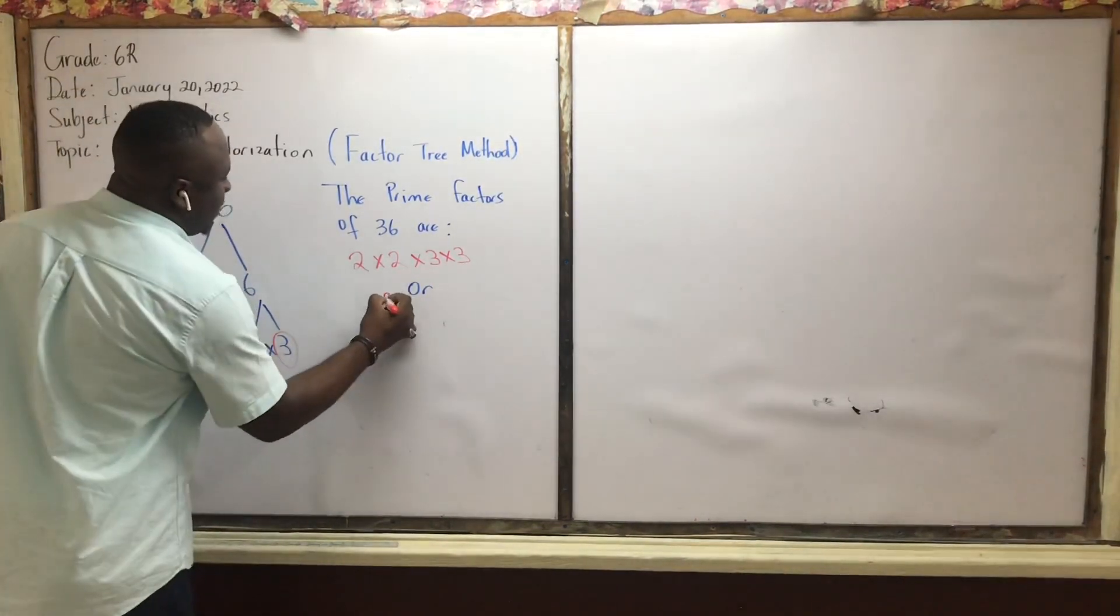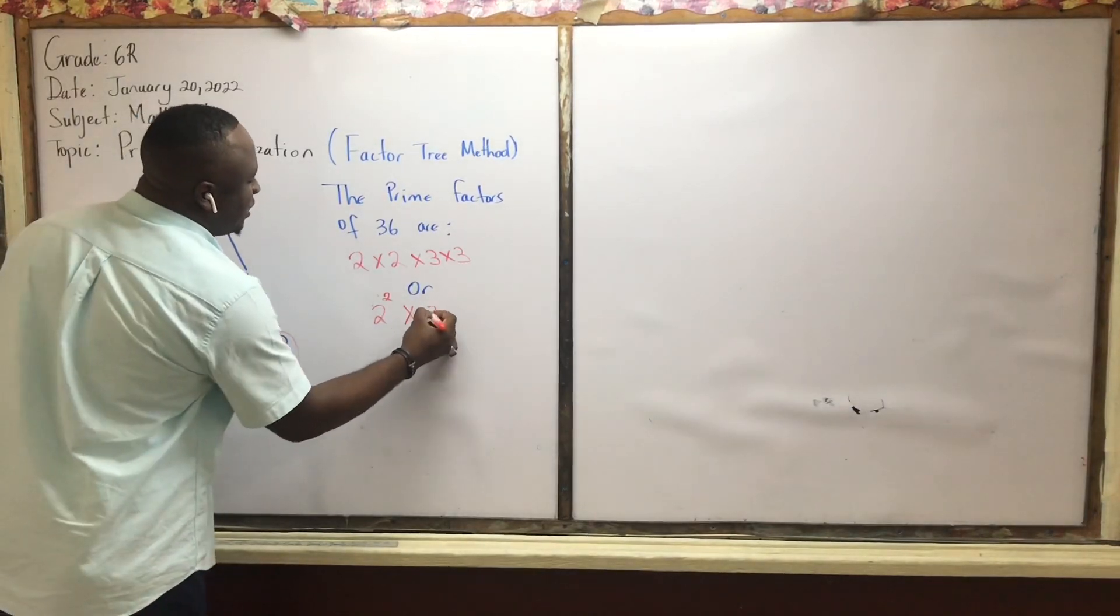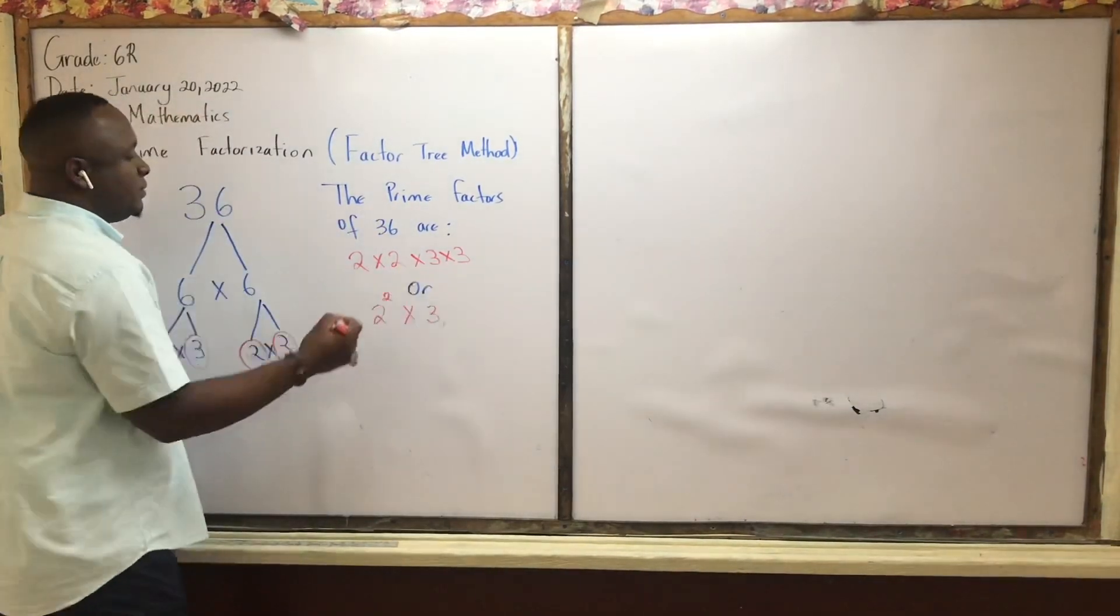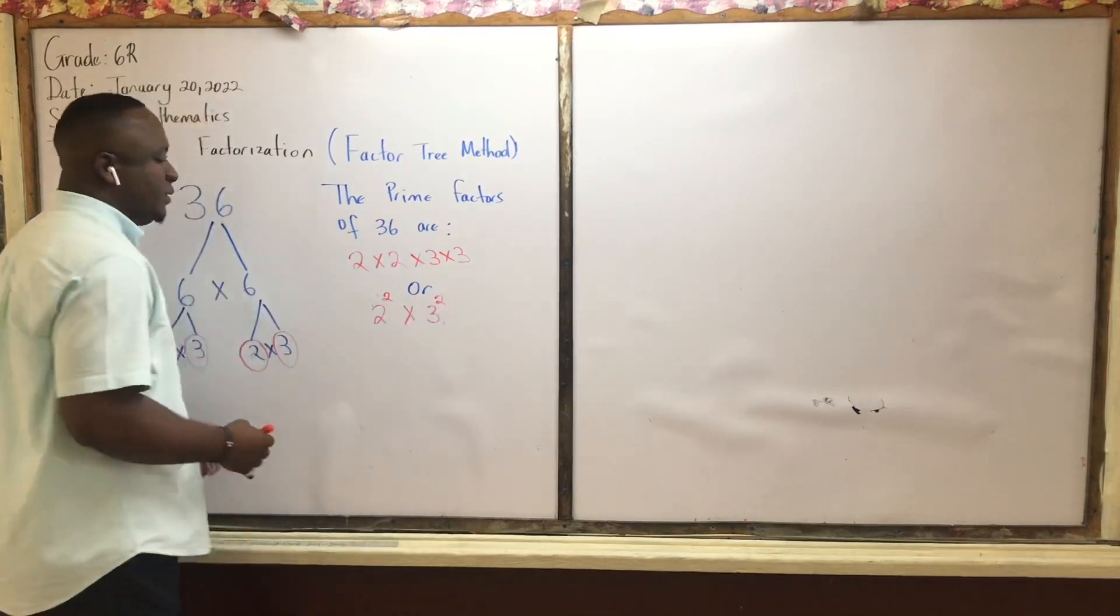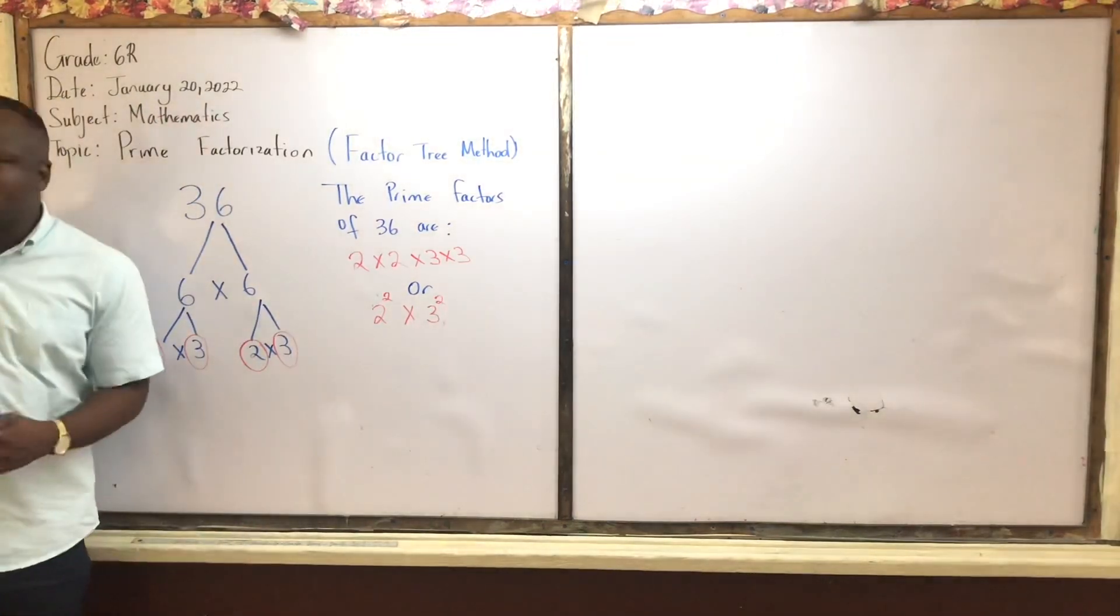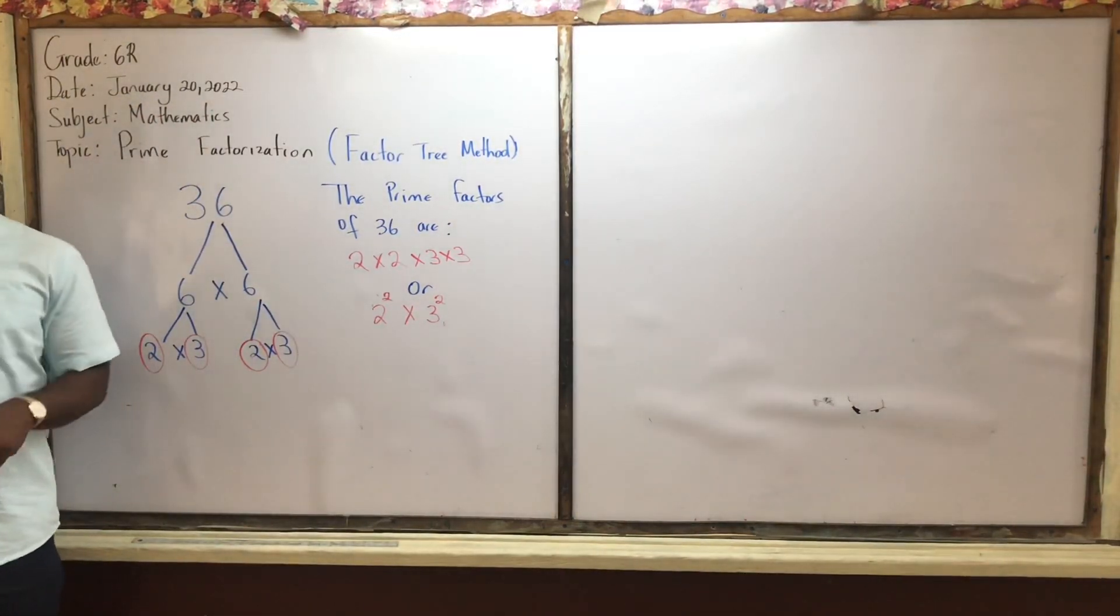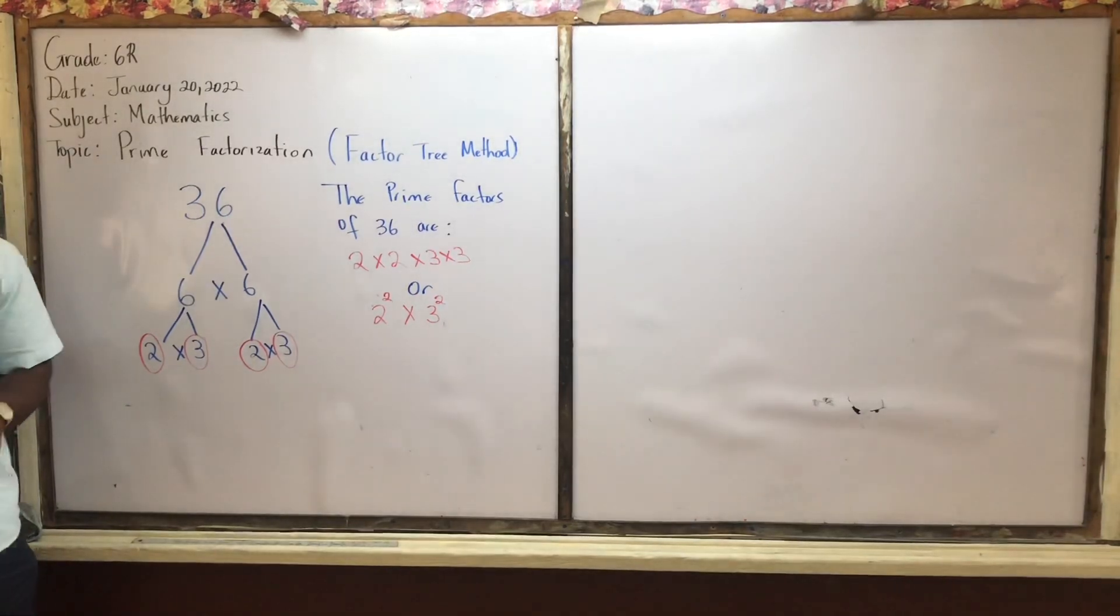That's 2 to the 2. 2 to the 2nd power. Right? Multiply by 3 to the 2. 3 to the 2nd power. So that is how you use the factor tree method to find the prime factors of a given number.